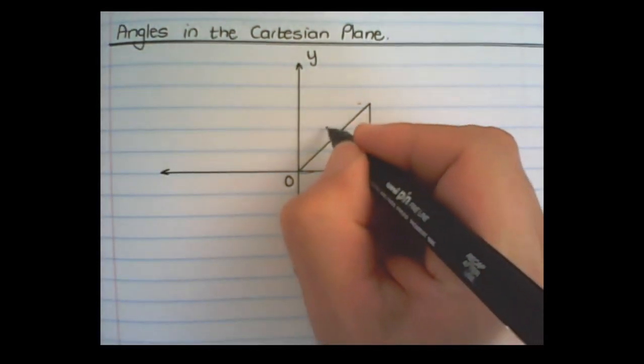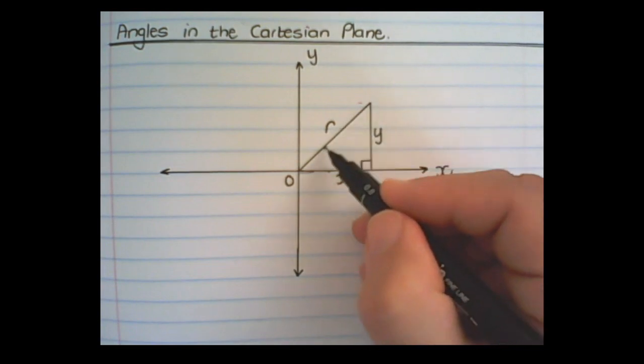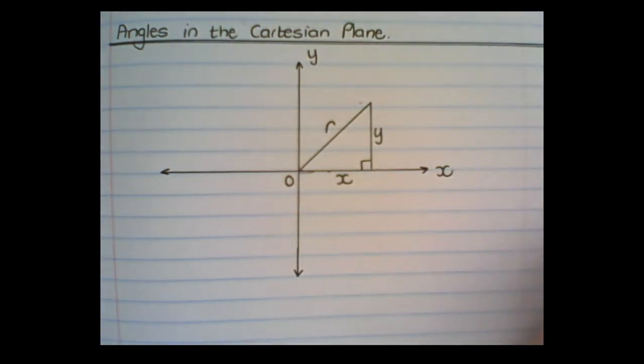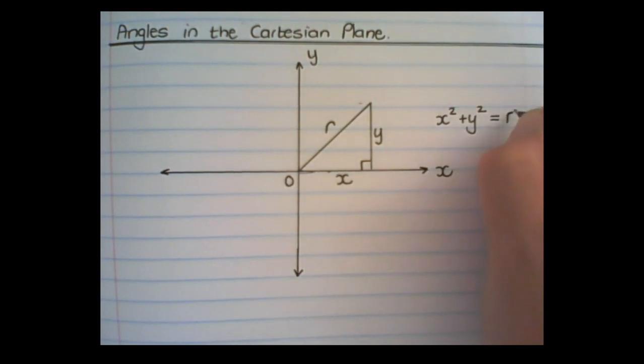I can also find the length of the hypotenuse line by using Pythagoras, meaning x-square plus y-square is equal to r-square.